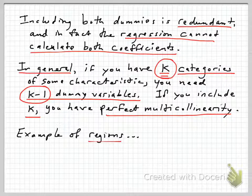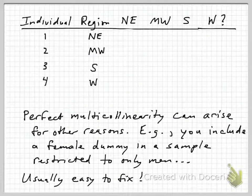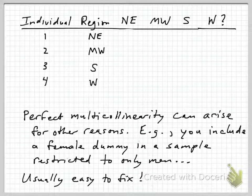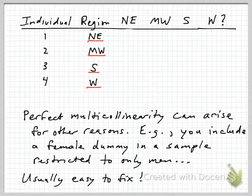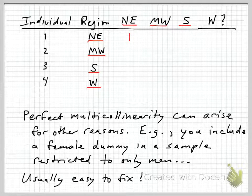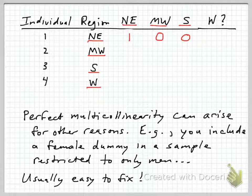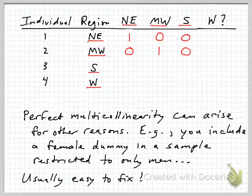Let's look at a slightly more complicated case — regions. Suppose you wanted to control in your regression for the region that somebody lives in. With four individuals in the sample and four regions — Northeast, Midwest, South, and West — we capture region using binary variables: Northeast, Midwest, and South. Person 1 lives in the Northeast, so they get a 1 for Northeast and 0s elsewhere. Person 2 lives in the Midwest, getting a 1 there. The person in the South gets 0, 0, and 1 for the South dummy.